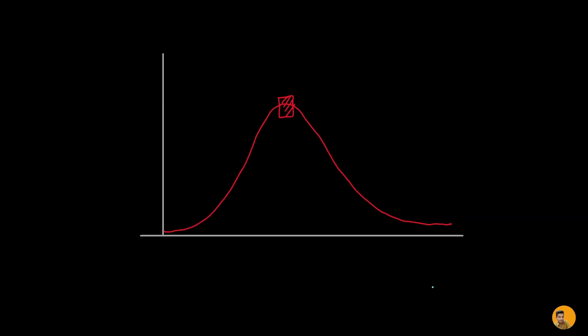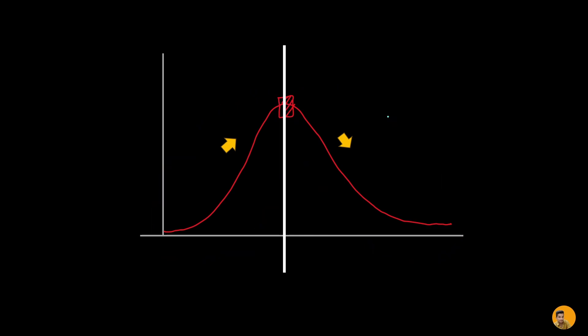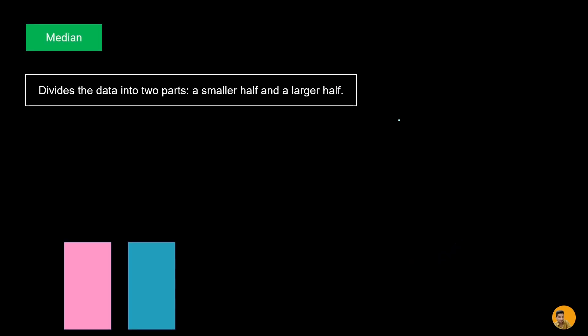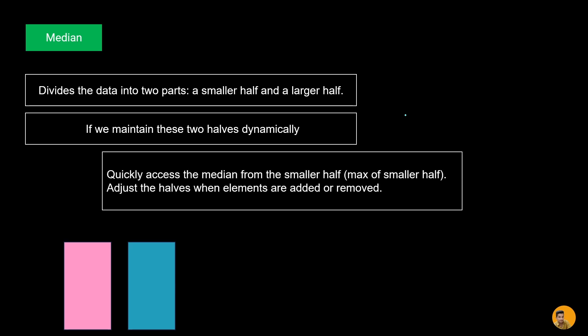Visually, consider a bell curve graph. On one side values are increasing and on the other side they are decreasing, and the median lies in the middle. That means one portion of values is increasing and another portion is decreasing. If we can arrange our window values in such a pattern, we can find an efficient solution.